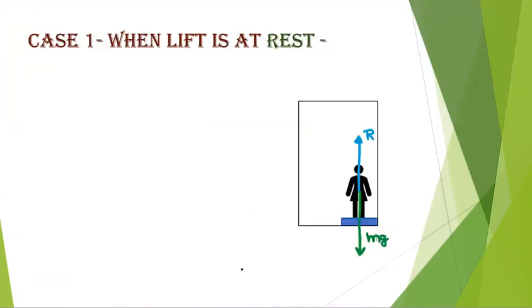Now come to its first case. When lift is at rest, if lift is at rest, we have seen that on any person, two forces will work. One is weight, which works in downward direction, Mg, and the other is reactionary force upward. Because lift is at rest, there is no acceleration. Acceleration will be zero.